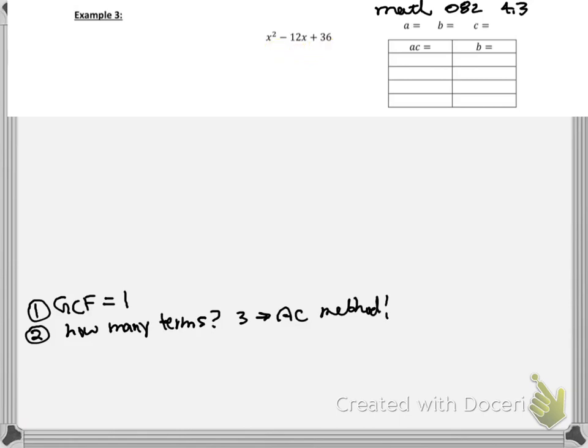So remember, the AC method first requires us to find A, B, and C. And we find them by looking at the coefficients here. So right now, it might look like there's nothing next to x squared.